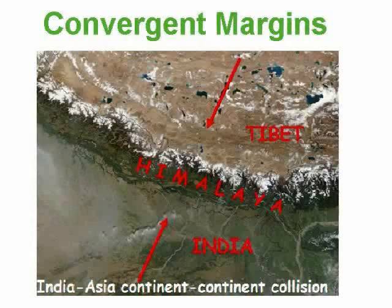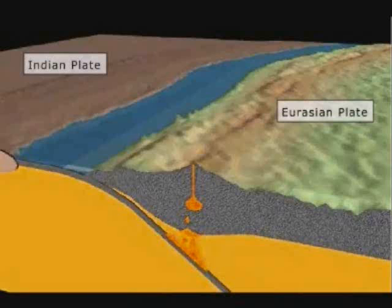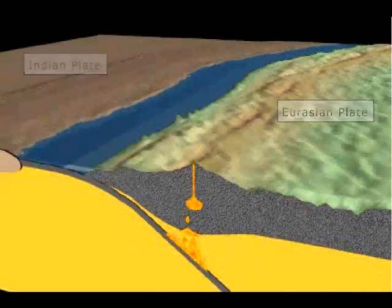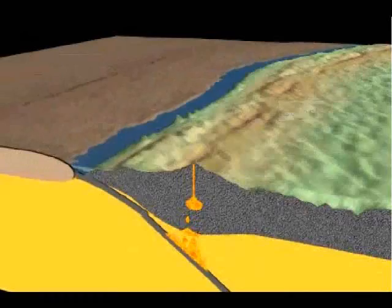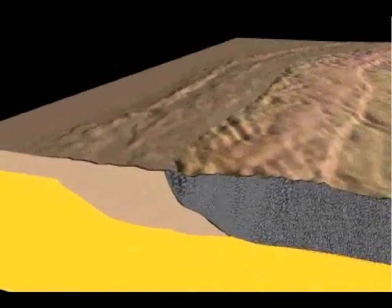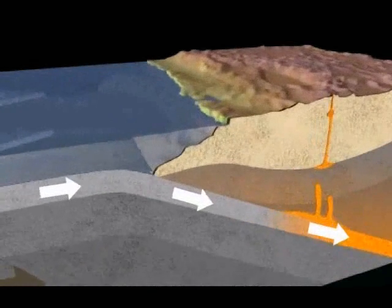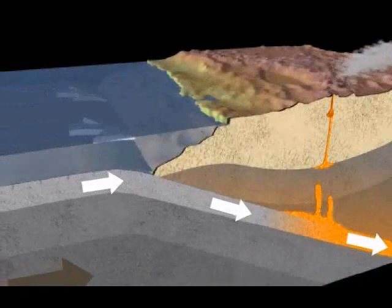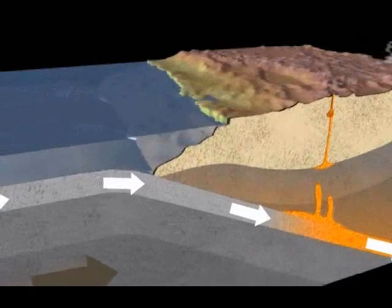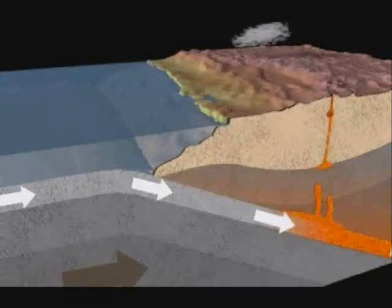Here is another example of convergent plate movement — one plate pushing against another. The Indian continent is moving; it is a separate plate. The Indian plate is slowly being pushed down under the Eurasian plate. Indian crust is being destroyed, while the Eurasian crust is being lifted, creating the Himalayan mountains.